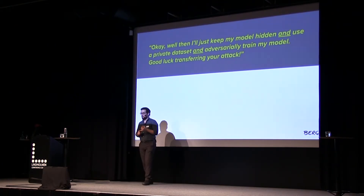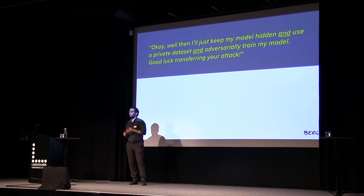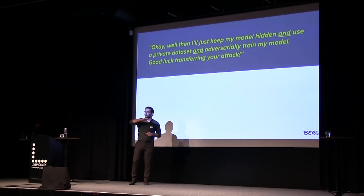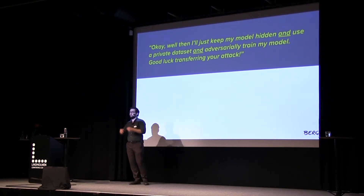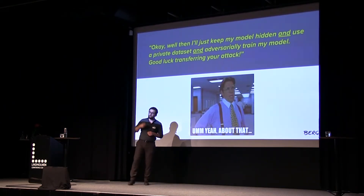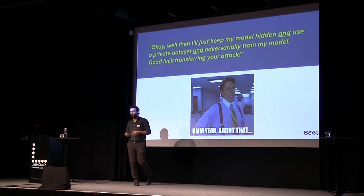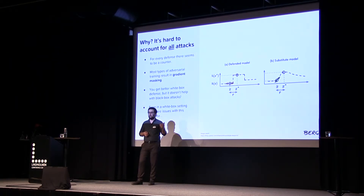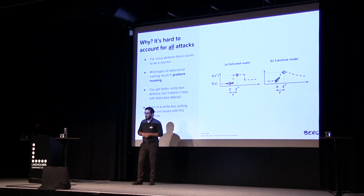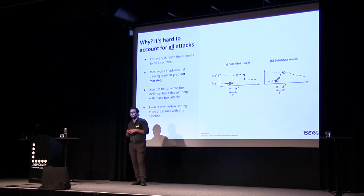You might then say: I'll keep my model hidden, use a private dataset, and adversarially train my model — find all these novel methods for generating adversarial examples, generate them yourself, and train your model to defend against them. As you might have guessed, that doesn't work as well either. The reason is it's hard to account for all forms of attacks. For every defense that pops up, just a couple of weeks later another attack emerges which destroys that defense.